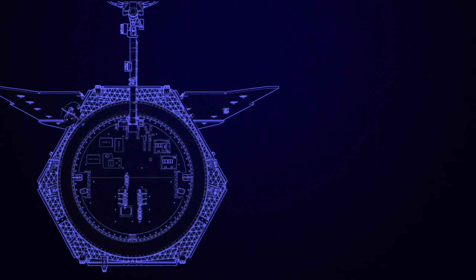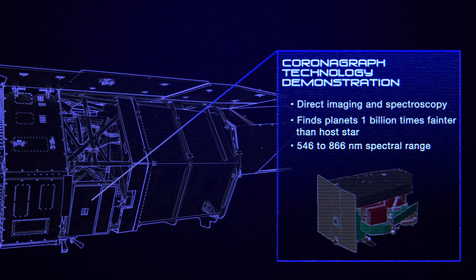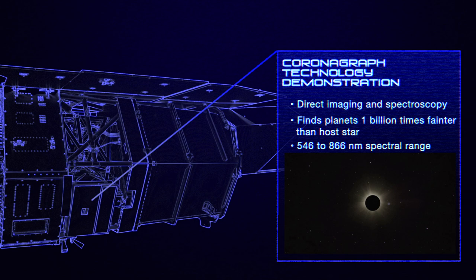Roman's other instrument is its coronagraph technology demonstration. A coronagraph blocks a star's light to capture the faint light from orbiting planets.